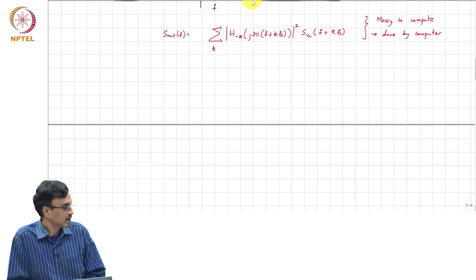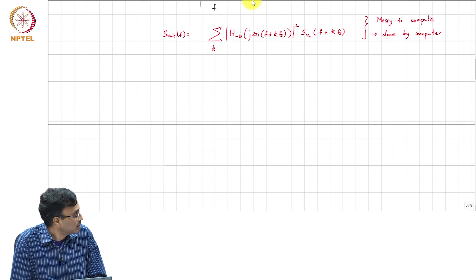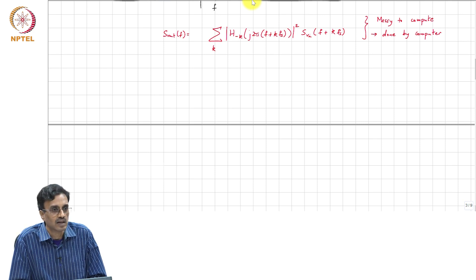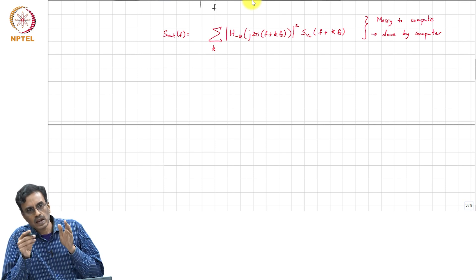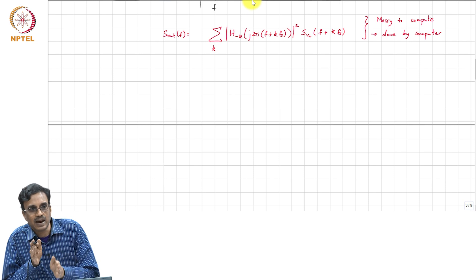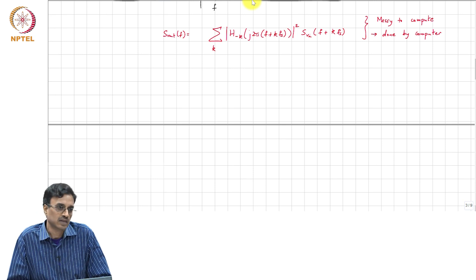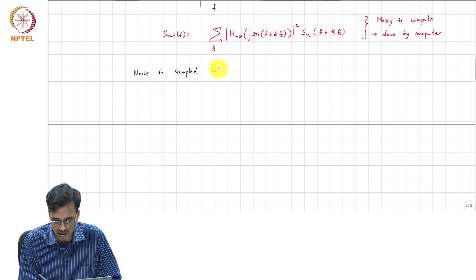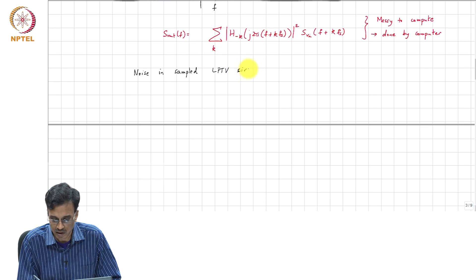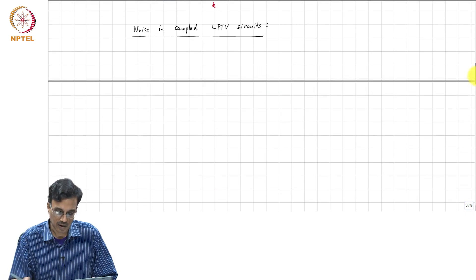Now, remember that in practice a lot of these networks that we use, especially in mixed signal, we are not really interested in the entire output waveform. We are only interested in the sampled value of the waveform, and the rate at which the output is sampled is the same as that at which the system is varying. So, noise in sampled LPTV system circuits.